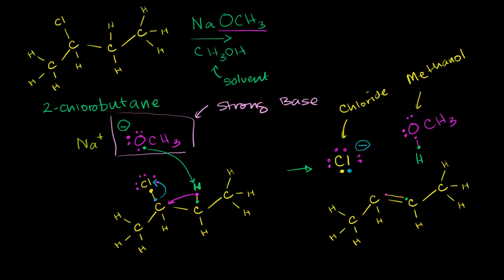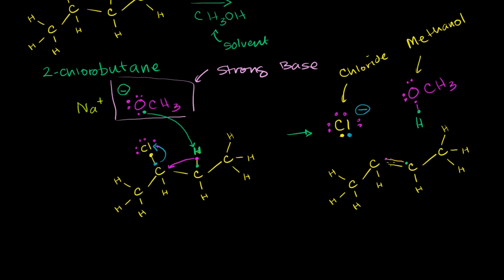So what are we left with? We have a chloride anion. We now have methanol. This was a strong base. Now it has become its conjugate acid, methanol, which is the same as the solvent. And now we're left off with 1, 2, 3, 4 carbons. But now it's an alkene. We have a double bond. So we could call this but-2-ene, or sometimes called 2-butene.